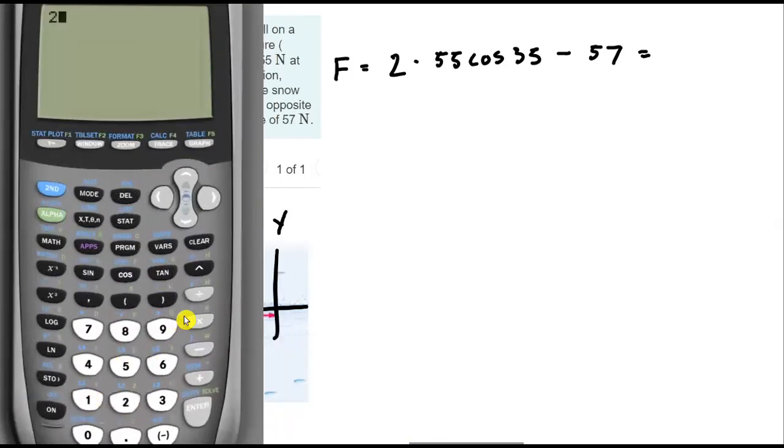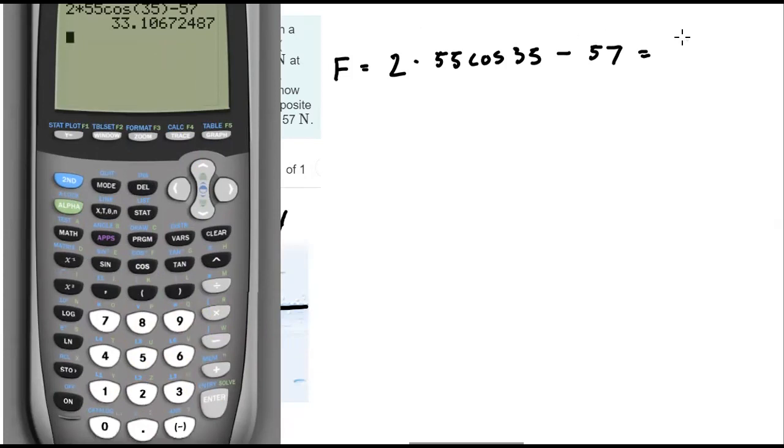So 2 times 55 cosine 35, and then we'll subtract that slowing force, and we get 33. We have a maximum of just two significant figures. So we will say our net force is 33 newtons.